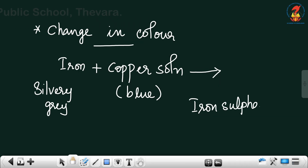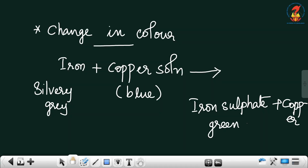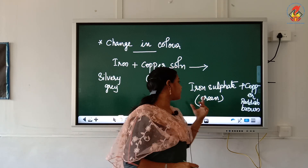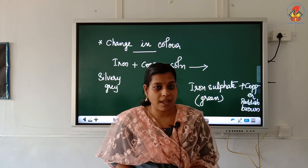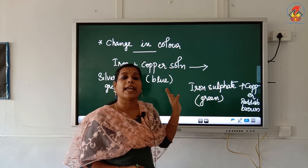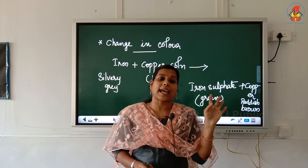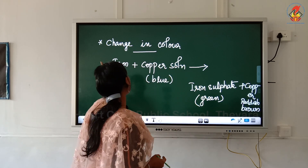Iron sulfate plus copper is produced. The colour of the solution changes from blue to green, and copper — which you know from copper wire used for electrical purposes — is reddish brown. So in any reaction where a colour change is observed, we can clearly tell that a chemical reaction or chemical change has taken place.